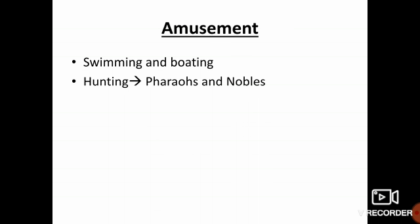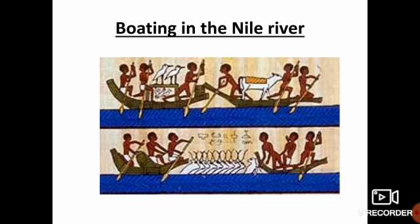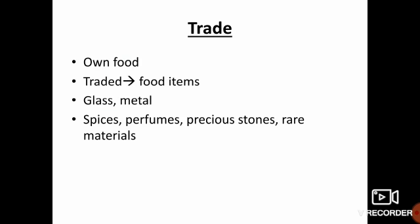Amusement. Swimming and boating in the Nile were the popular amusements of the people of the Egyptian civilization. Hunting was the chief form of entertainment for the pharaohs and nobles. This is the image of hunting and this is the image of boating in the Nile River.